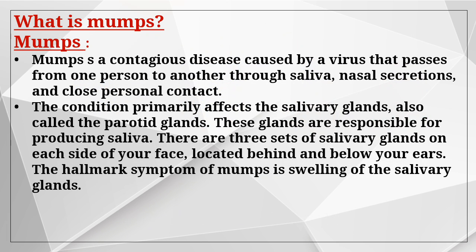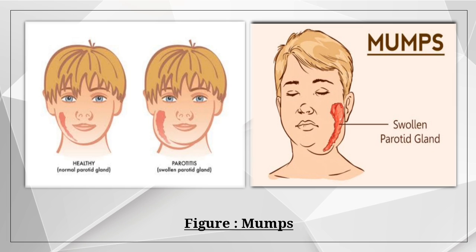Mumps is a contagious disease caused by a virus that passes from one person to another through saliva, nasal secretions, and close personal contact. The condition primarily affects the salivary glands, also called the parotid glands, which are responsible for producing saliva. There are 3 sets of salivary glands on each side of your face, located behind and below your ears. The hallmark symptom of mumps is swelling of the salivary glands, which can be observed in the diagram.